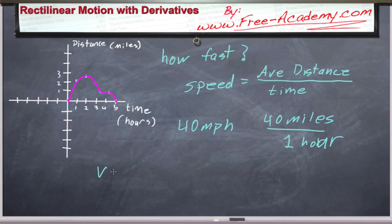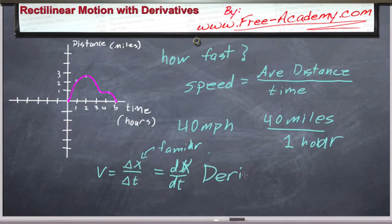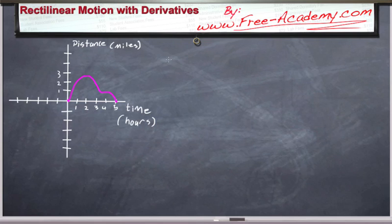Let's say our velocity or our speed is delta x divided by delta t. Well, doesn't this look really familiar? How about dx over dt? This is a derivative. If you take the derivative of your distance with respect to time, you get the velocity. So let me clear all this out of the way. The derivative with respect to time of the distance is the velocity.